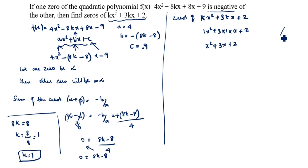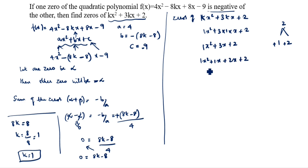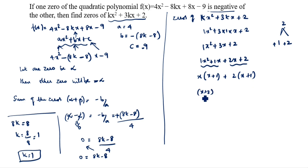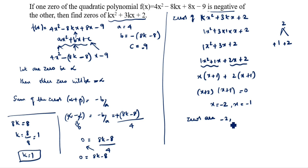We will factor x² + 3x + 2 using the factor tree method. The product is 1 × 2 = 2, and we need factors that add to 3: that's 1 and 2. So we split it as x² + 1x + 2x + 2. Taking x common: x(x + 1) + 2(x + 1), giving (x + 2)(x + 1) = 0. Therefore x = -2 and x = -1. So the zeros are -2 and -1.